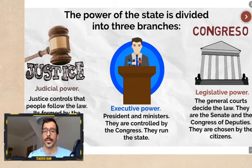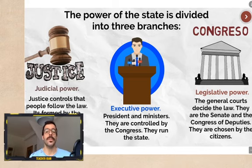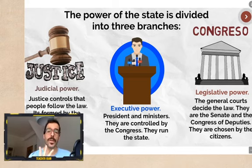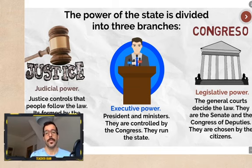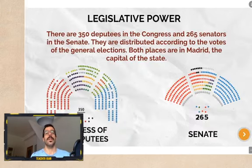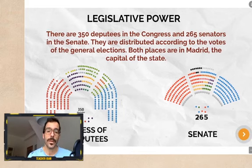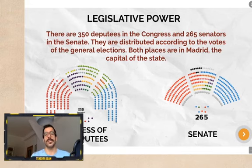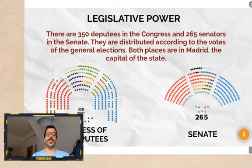The third branch is the legislative power. This is maybe the most complex. They are called the General Court and are formed by two chambers: the Senate and the Congress of the Deputies. They are chosen by the citizens once every four years — we vote to choose our representatives in the Congress and the Senate. There are 350 deputies in the Congress and 265 senators. We can see all these colors in the Congress of the Deputies and in the Senate.